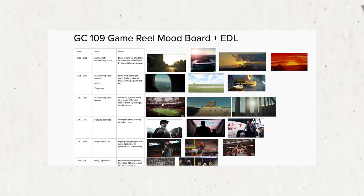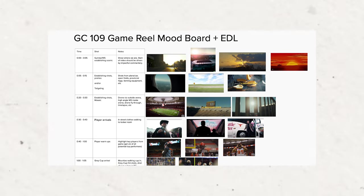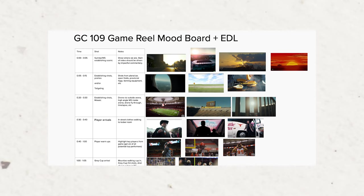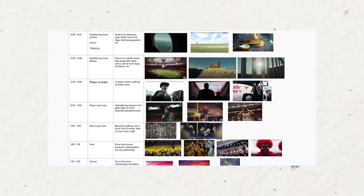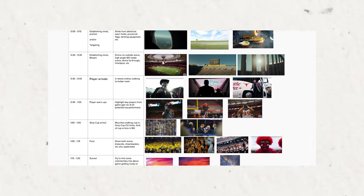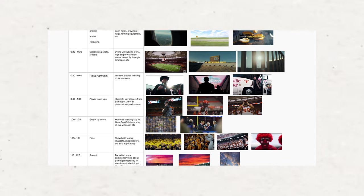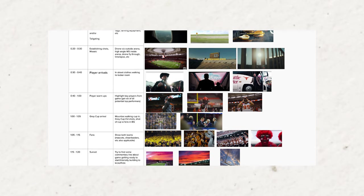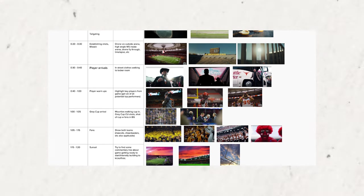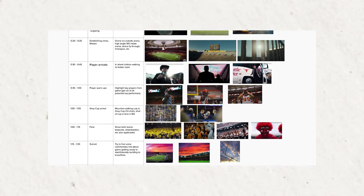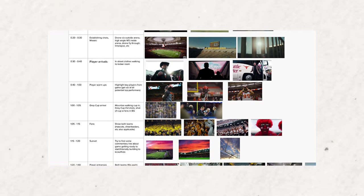I wanted to start with some wide establishing shots, and you can see I've taken a lot of reference from NFL Films stuff. I think I actually used some AI-generated shots as reference to give me something realistic looking. It was establishing shots, shots of the prairies, shots of the tailgate. The game was being played in Saskatchewan, which is like the prairies in Canada, so it's very flat. I kind of wanted to show that — stuff like in the tunnel, off the bus, and closeups of players, like a fit check type of thing.